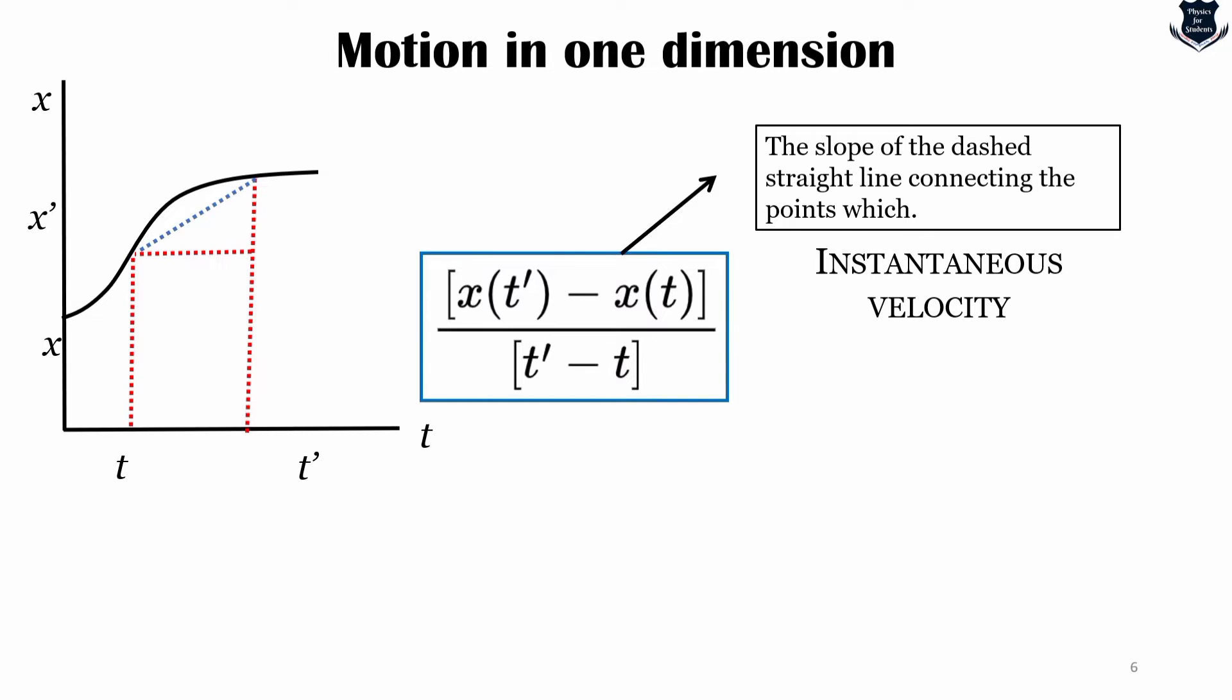There is something which is further more important which is called instantaneous velocity. For example, if you can look at the speedometer. If you hold t fixed and let t prime be closer and closer to t, then the quotient will approach a definite limiting value.